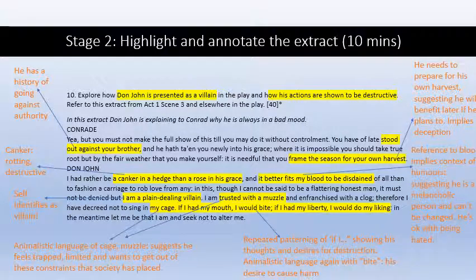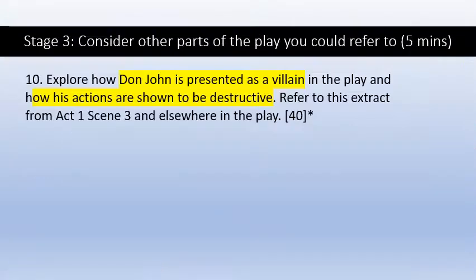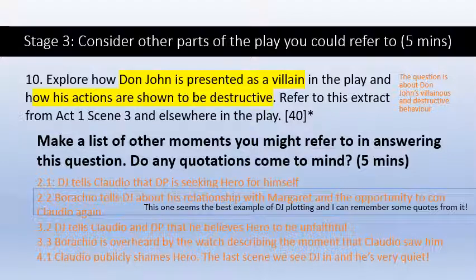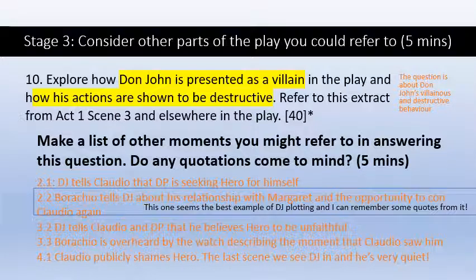Spend five minutes reading through and picking out anything you can that shows his villainous behaviour in this scene — highlight it and annotate it. You can read those on screen; stop the presentation there and annotate your extract. You also need to talk about somewhere else in the play, so make a list of all the other places where Don John is presented as a villain and his actions are shown to be destructive. Act 2, Scene 2 — when Borachio tells Don John about his relationship with Margaret and the opportunity to con Claudio — seems the best example of Don John plotting. It's important that you can remember some quotes from it.